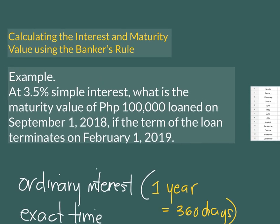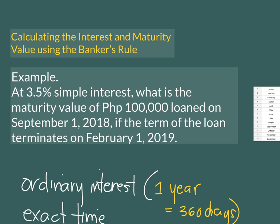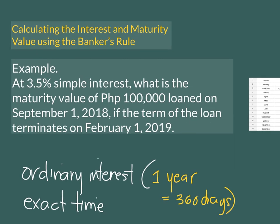Let's use this example: at 3.5% simple interest, what is the maturity value of a 100,000 pesos loan on September 1, 2018, if the term of the loan terminates on February 1, 2019? As you can see, this is a simple interest problem, and the date from September 1, 2018 to February 1, 2019 is less than a year. Suppose we are to apply the banker's rule, so let's compute the simple interest the usual way.